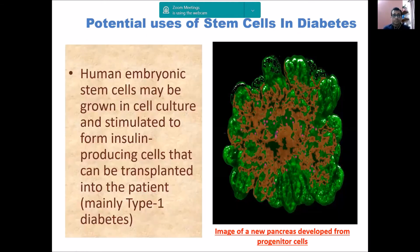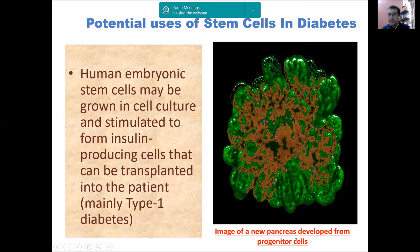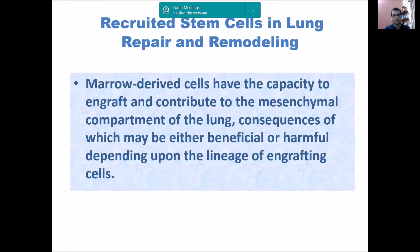Embryonic stem cells can be converted to insulin-producing beta-cell-like cells of the pancreas, which can then be transplanted into type 1 diabetes patients. The diagram shown here illustrates a new pancreas developed from progenitor cells — embryonic stem cells to progenitor cells to a new pancreas. While its shape may differ, it will be a functional endocrine pancreas with beta cells that produce insulin.